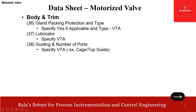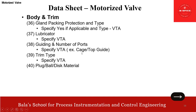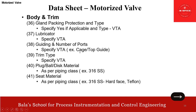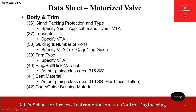Guiding and number of ports — specify VTA; example, cage or top guide. Trim type — specify VTA; plug, ball/disc material as per piping class, example 316 SS. Seat material as per the piping class — 316 SS, hard face, and/or Teflon. Then cage/guide bushing material — specify VTA. Stem material as per piping class, 316 SS, and NAS compliance — this one is applicable only for applications such as wet H2S or sour services. NAS stands for National Association for Corrosion Engineers.